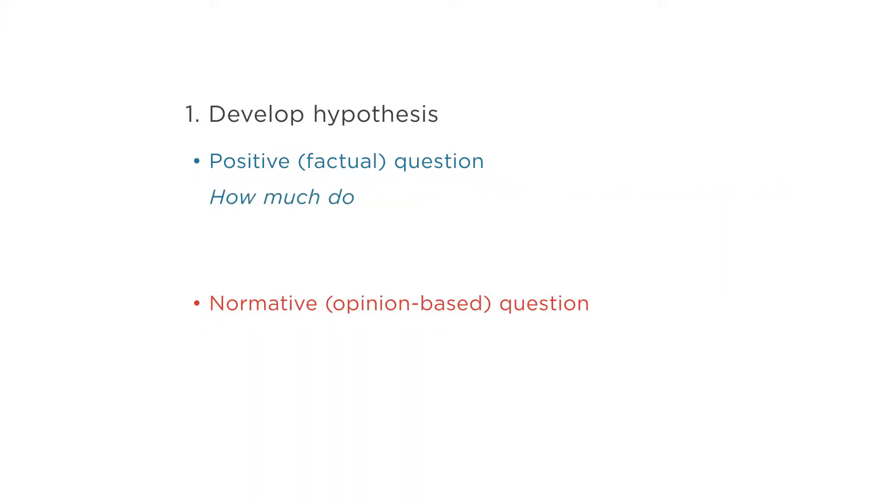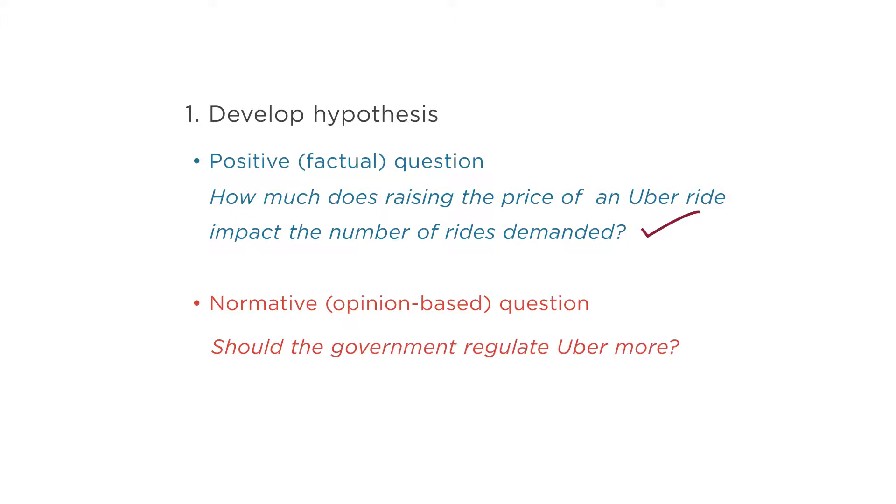Similarly, the question, how much does raising the price of an Uber ride impact the number of rides demanded, is positive and testable. It's a great hypothesis. But the question, should the government regulate Uber more, is a normative question that does not work as well as hypothesis. Now, these other normative questions are important and interesting. And the tools of economics can certainly help us think about them. But they're not testable hypotheses with clearly fact-based answers.